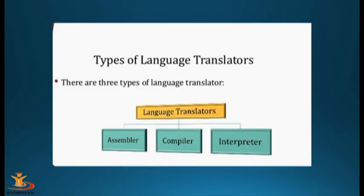As seen in the diagram, there are three types of translators: Assembler, Compiler, and Interpreter. These three types of translators are there for converting the source program into object code. The Assembler is used for the conversion of a program written in assembly language into object code.